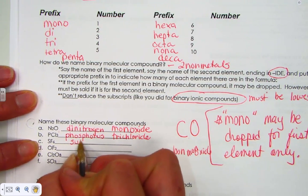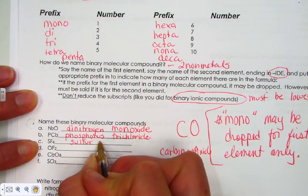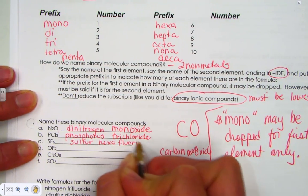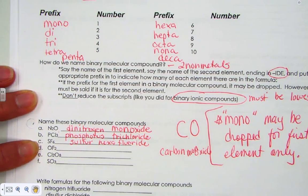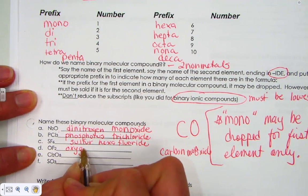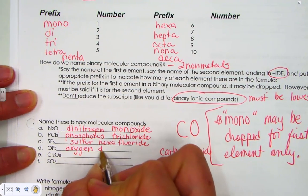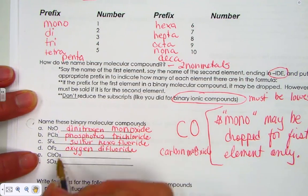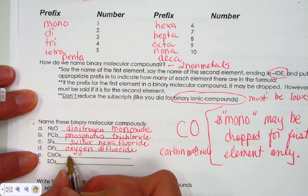Alright, welcome back. I bet for letter C, you wrote sulfur hexa for number six. Hexafluoride. Sulfur hexafluoride. Letter D, just one oxygen. So I'm going to leave the mono off. Oxygen. Difluoride. Cl2O8, the prefix dichlorine octoxide.